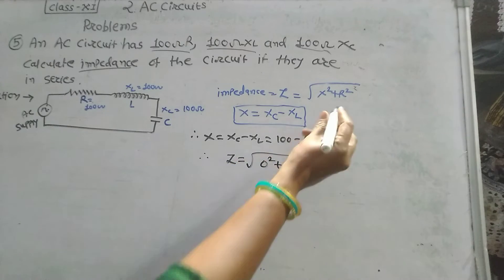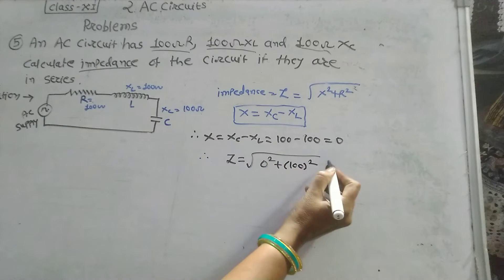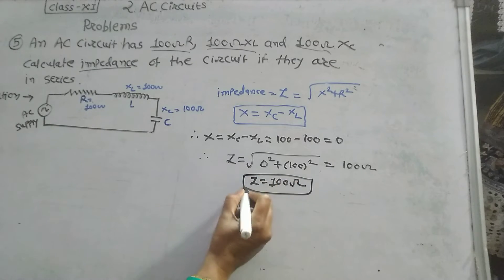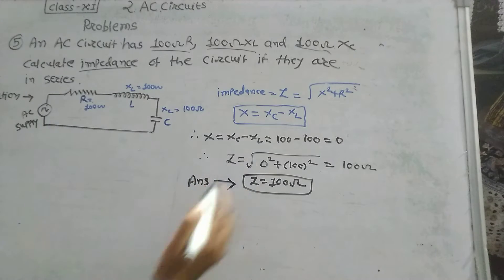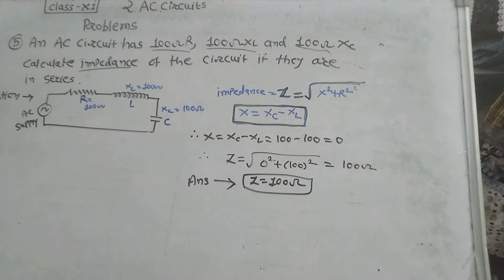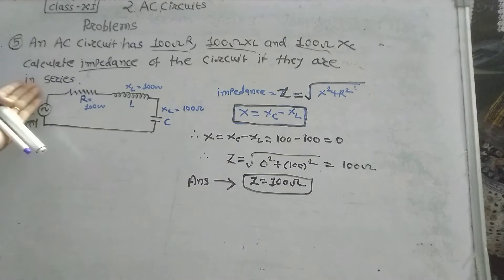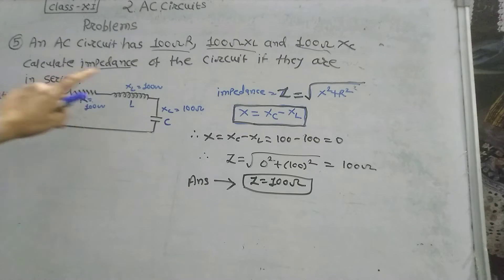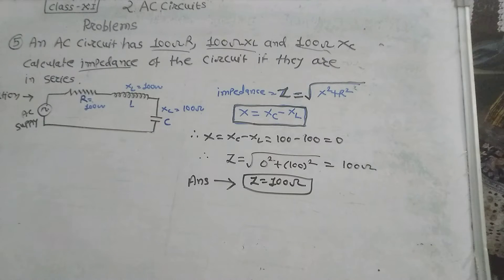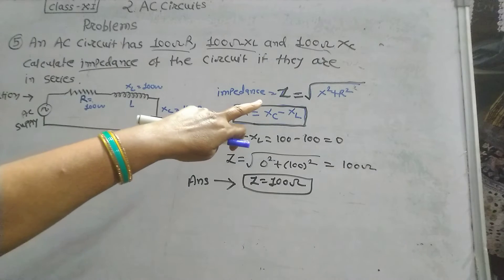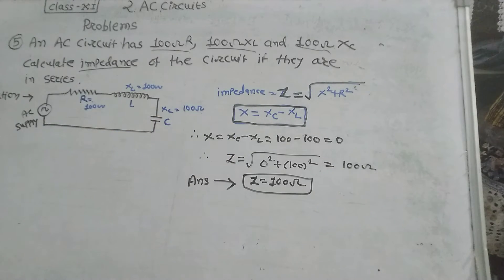Therefore impedance Z equals square root of 0 squared plus 100 squared, which gives Z equal to 100 ohm. For parallel circuits, the formula is Z equals V divided by I-total, where I-total is the total current flowing through the circuit and V is the input voltage. But in series, when inductor and capacitor are in series, impedance is calculated by Z equals square root of X squared plus R squared.